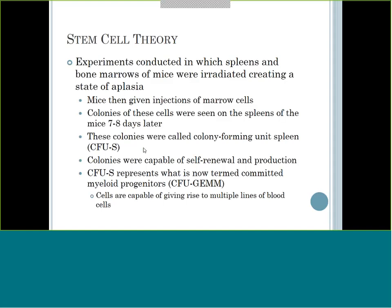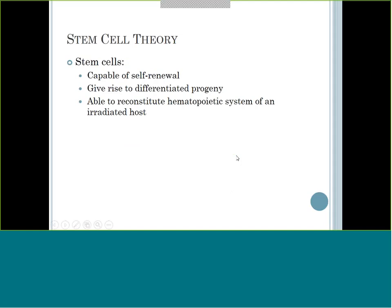Stem cells are self-renewal and can produce an entire blood cell system. There are three functions of stem cells from that theory: First, stem cells are capable of self-renewal. Second, they give rise to differentiated progeny - they can give rise to different cell lines including red cells, platelets, and different white blood cells. Third, as seen in the mice, they were able to reconstitute a hematopoietic system of an irradiated host. You have to remember stem cells are capable of those three things.